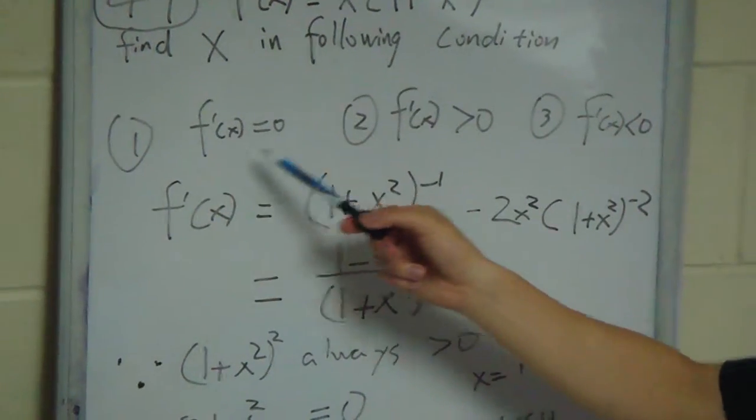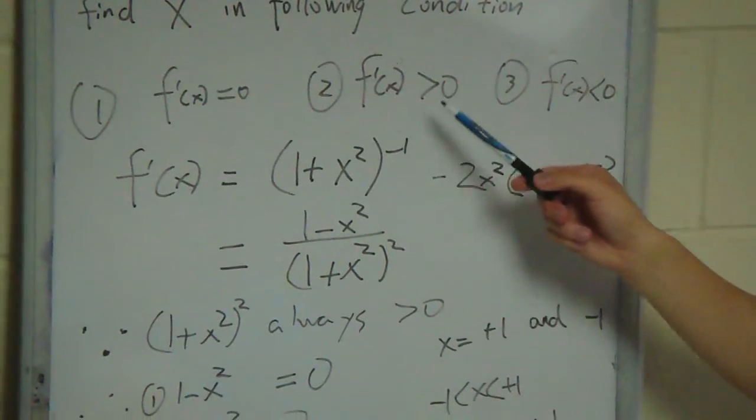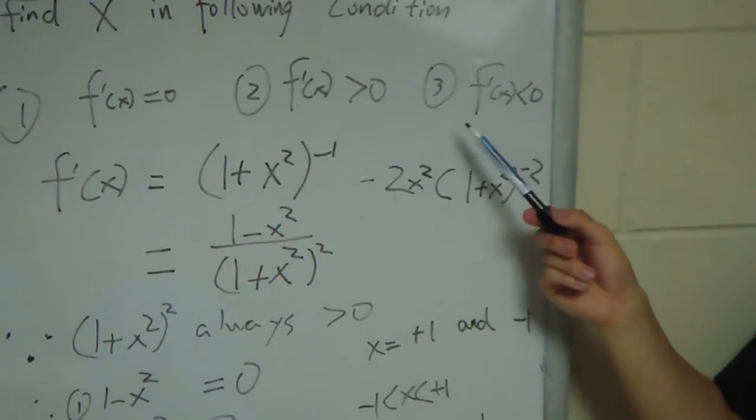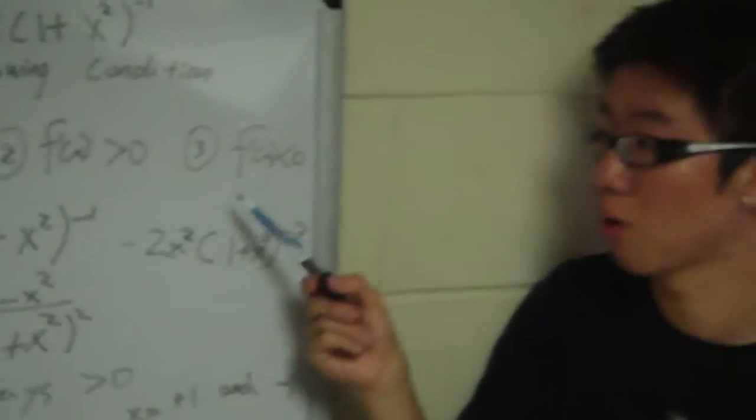One is the first derivative equals 0, the first derivative greater than 0, and the third one is the first derivative smaller than 0.